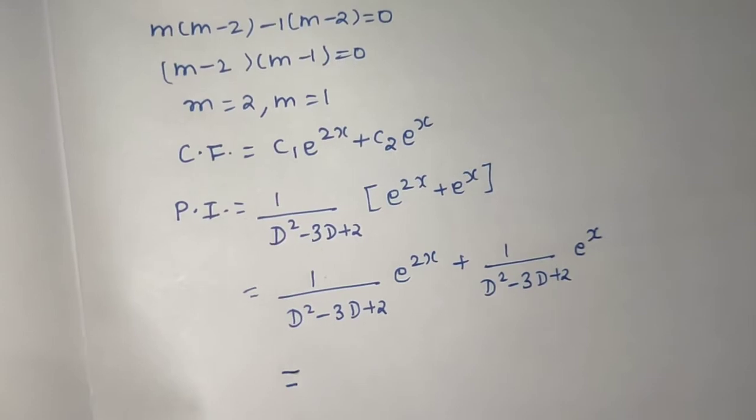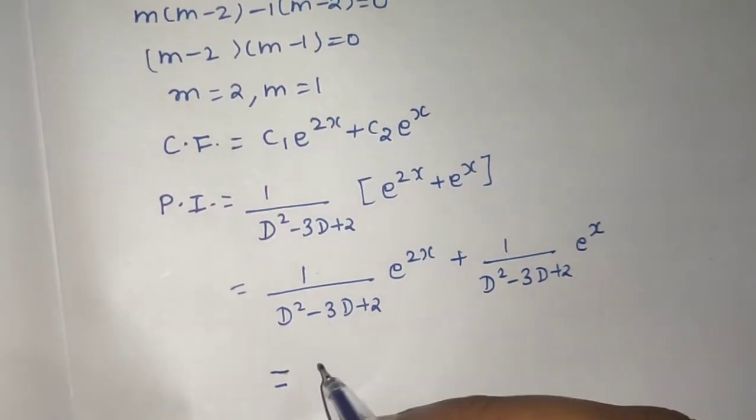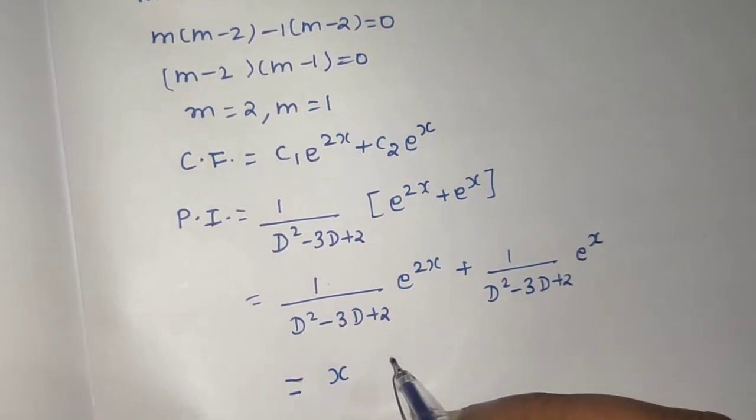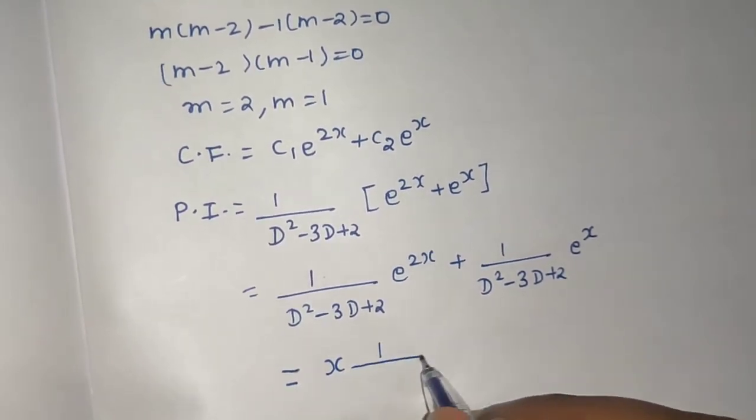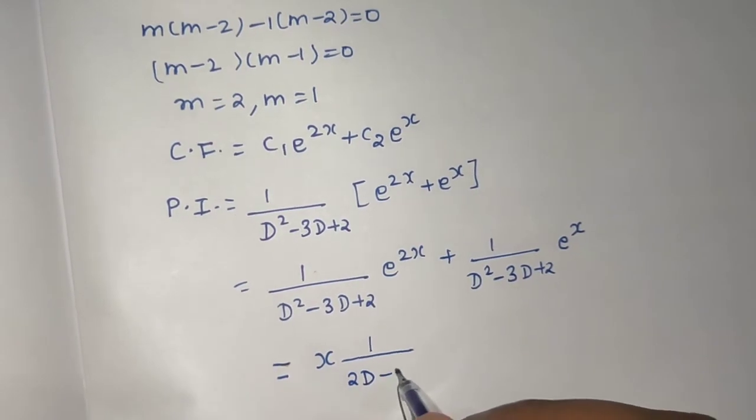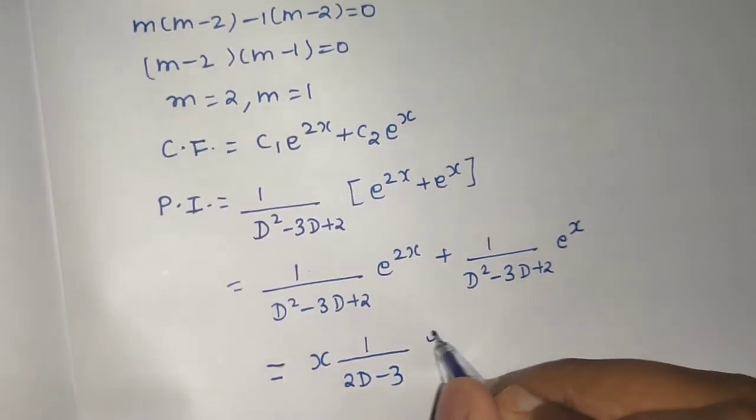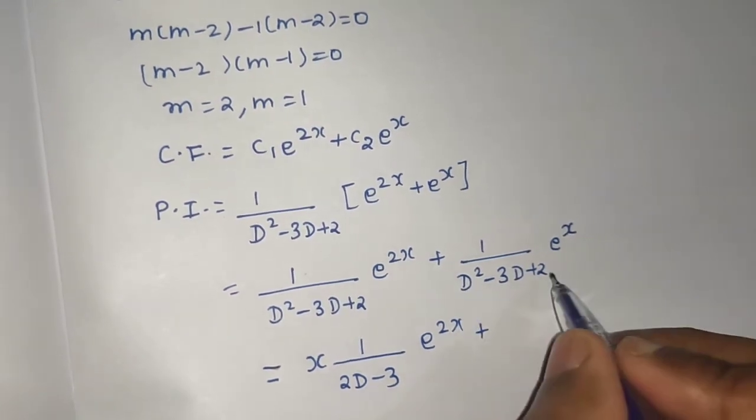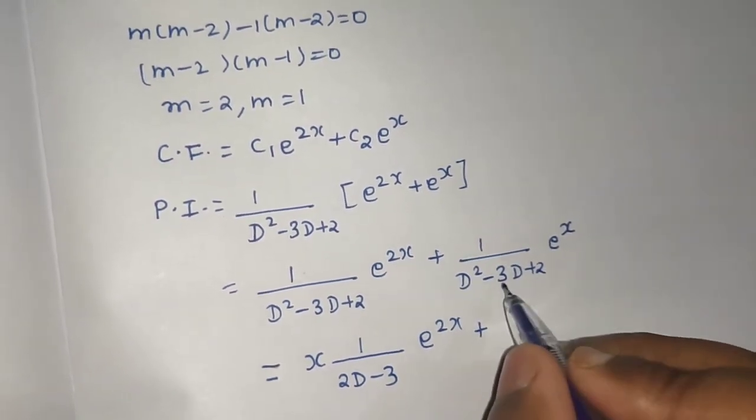So what do we do in that case? Multiply by x and differentiate the denominator. So you will get 2D minus 3. If you put 1 here, so 1 plus 2, 3, 3 minus 3, 0.